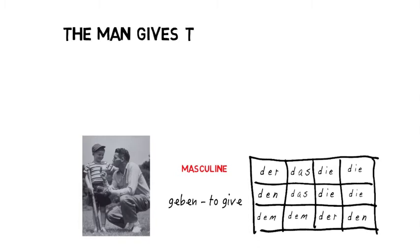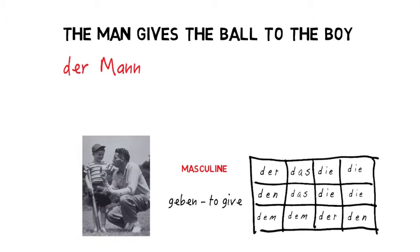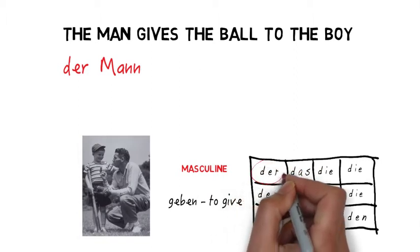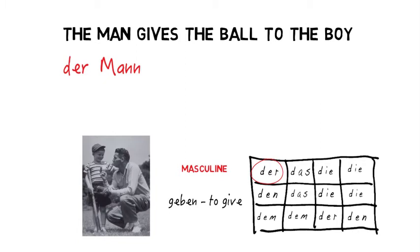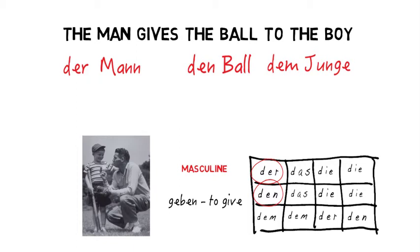Here's the sentence: the man gives the ball to the boy. The man is the subject of the sentence, so he needs a nominative article. Mann is masculine, so it's der Mann. The man gives what? The ball. The ball is a direct object, and it's accusative — it will need 'den'. Now, to whom does the man give the ball? To the boy. The boy answers the 'to whom' question, so it's dative — it will need 'dem'.